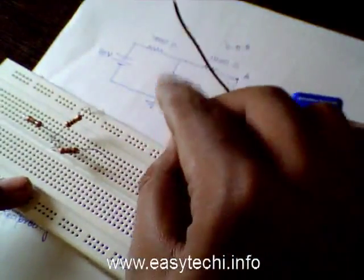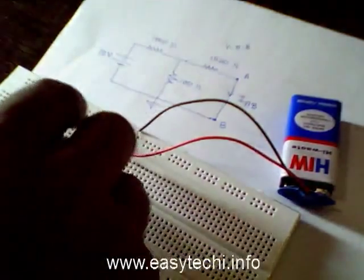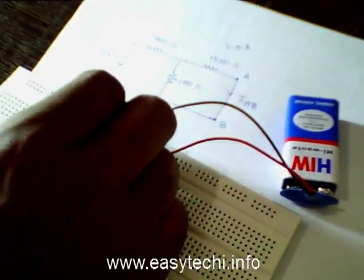Now for the second part, the positive of the battery will go to one end of the 1500 ohm resistor, and the other end will go to ground. The 1000 ohm resistor's other end will also go to ground.